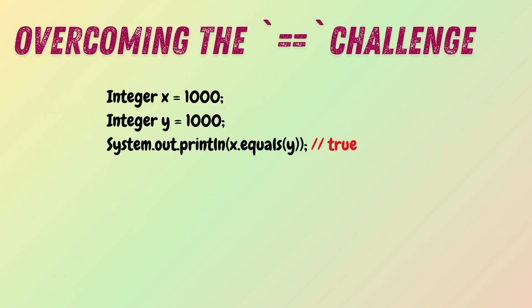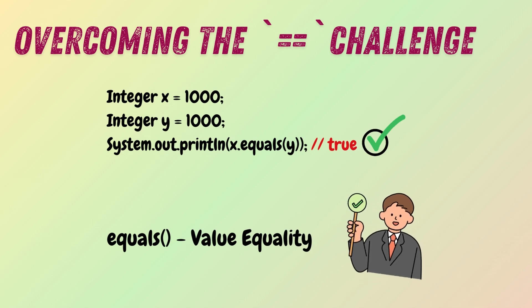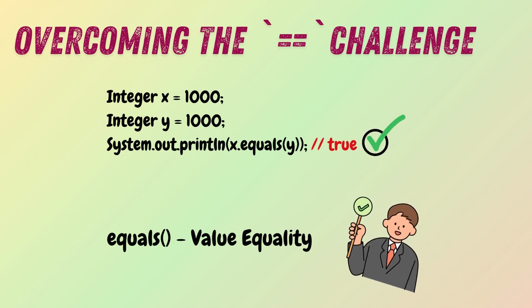To correctly compare the values of wrapper objects, use the equals method, which compares the actual values within the objects rather than their references. The equals method ensures value equality by comparing the content of the objects, making it the appropriate choice for value comparisons in Java. Understanding object caching and the equal-to operator is key — without this knowledge, using == can cause unexpected results for values outside the cached range.